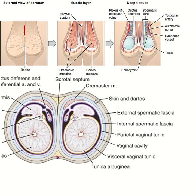During the incision, the layers cut include: skin, dartos muscle, external spermatic fascia, cremasteric fascia, and the scrotal septum. By a single midline incision, both vas deferens are exposed. In the lateral incision approach, the dartos muscle, external spermatic fascia, cremasteric fascia, and internal fascia are cut, and each individual vas deferens is exposed separately.